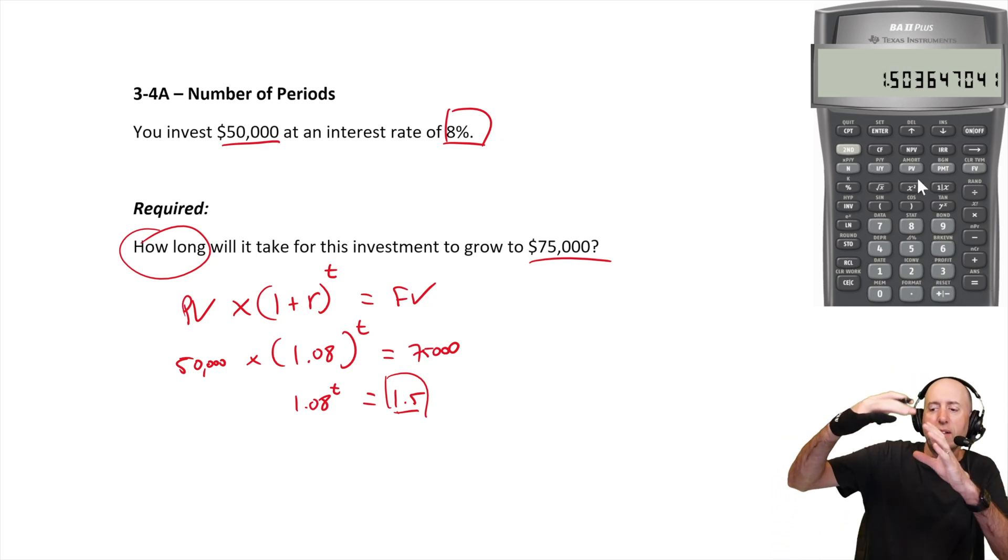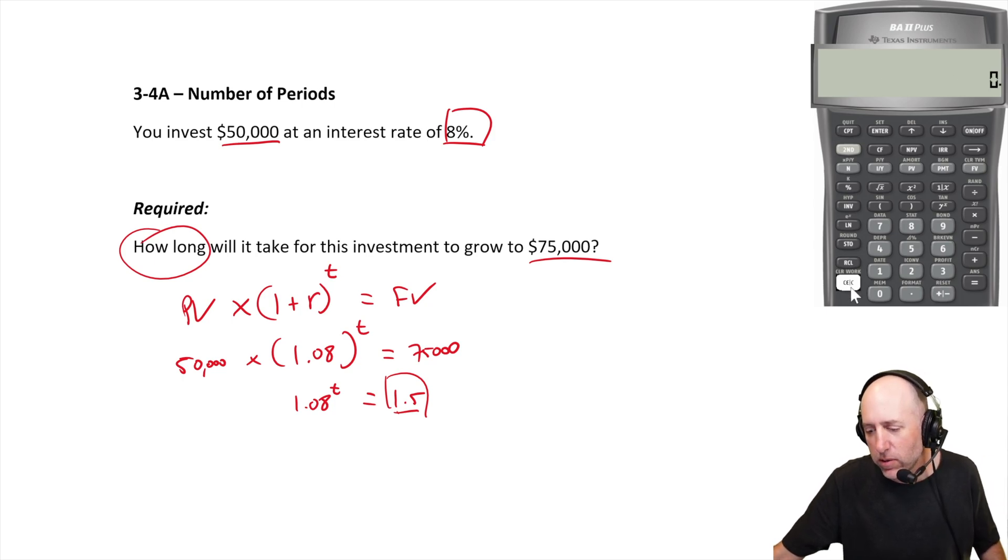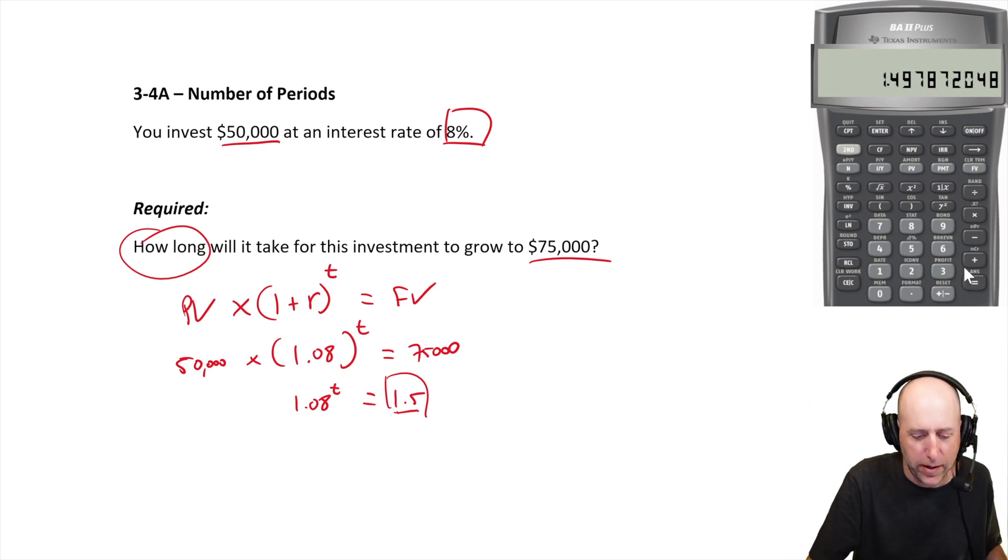I'm still not there, it's higher than 5.2. 1.08 to the power of 5.3, now I'm just a little too high. It's somewhere between 5.2 and 5.3 years. 1.08 to the power of 5.25 - 1.497. I'm going to stop there. I'm going to say t here just by trial and error...